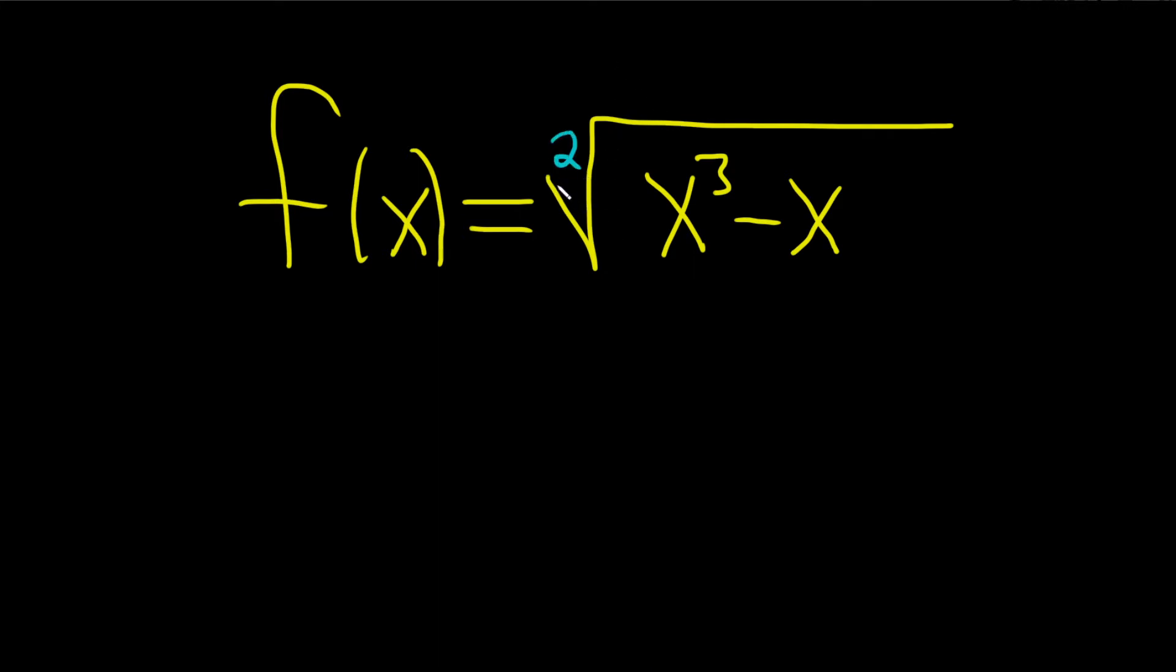So whenever you're looking for the domain of a root function and you have an even index, the very first step is to take this and set it greater than or equal to zero. So again, whenever you're looking for the domain of a root function and the index is even, you just do this.